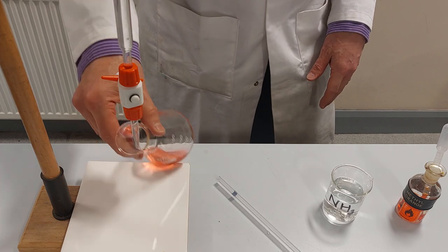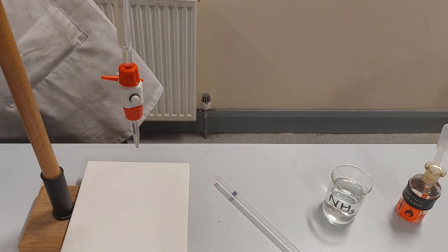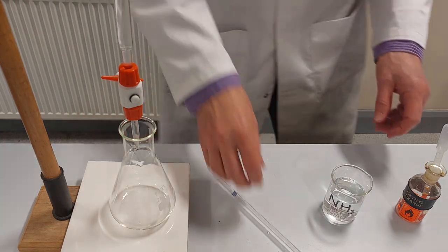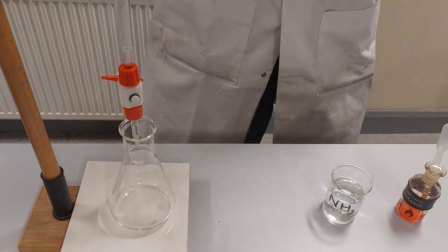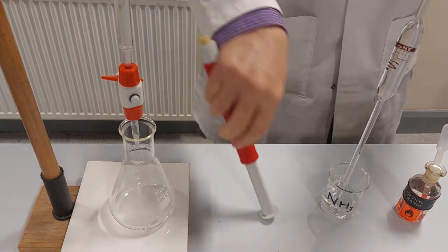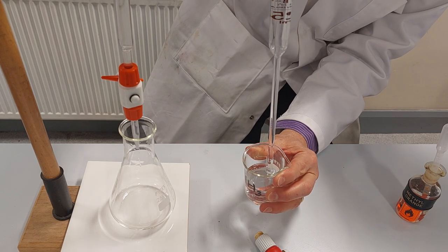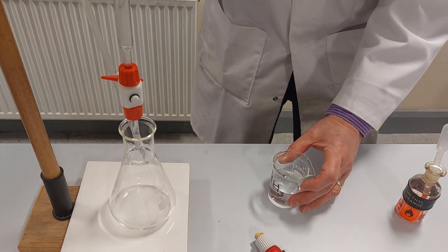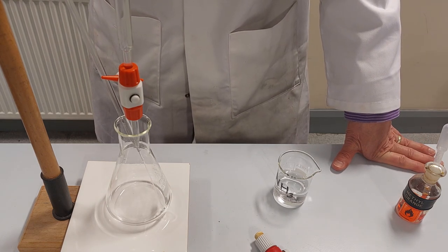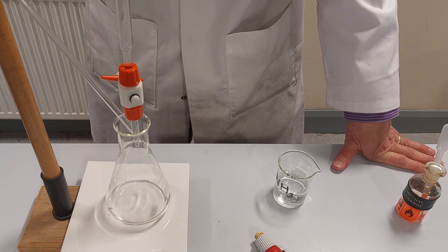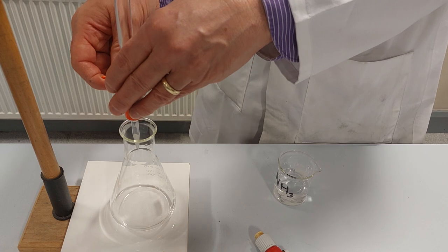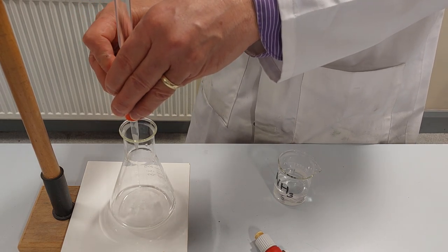Okay I'm just going to do it again. Give the flask a good rinse here and I'm going to measure another load of ammonia. But this time I'm not going to use any indicator and the reason for that is I want to get a pure sample of the mixture that's formed when the acid and the ammonia react.